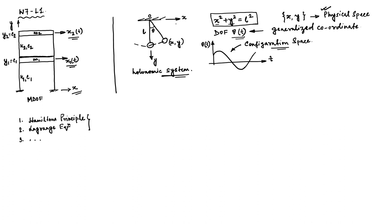Coming back to the pendulum: if you have a chord that changes its length, the constraint condition is no longer valid. How many degrees of freedom do we have? We have to consider both x and y, because the bob will swing in the xy plane and can also move away from origin O. In that case we will have 2 degrees of freedom and the generalized coordinate will match the physical coordinate, which may not always be true.